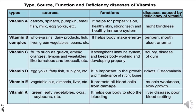Vitamin K. Sources include green leafy vegetables, okra, soybeans, etc. Functions: it helps our body to stop bleeding. Diseases caused by deficiency of vitamin K are liver disease and poor blood clotting.